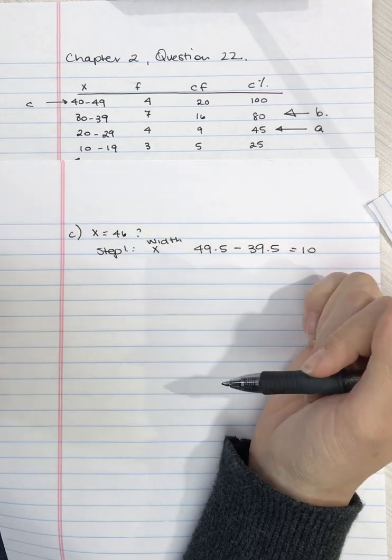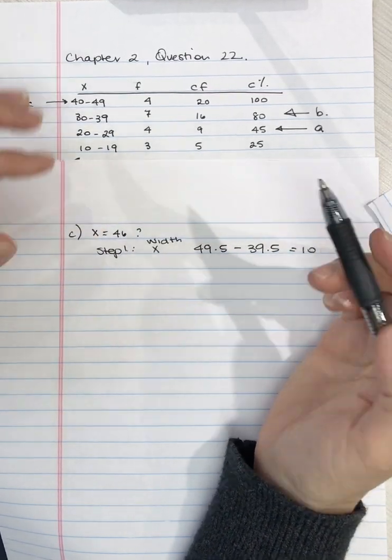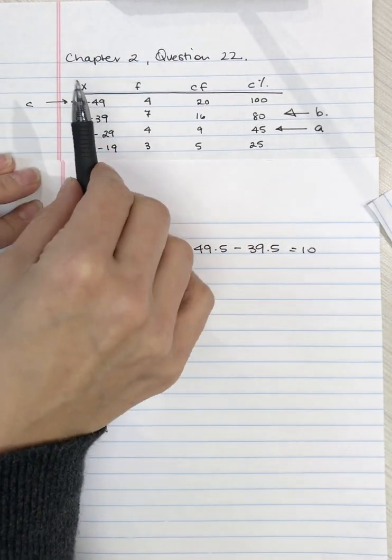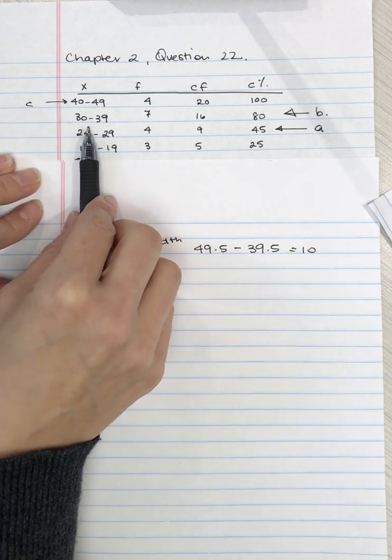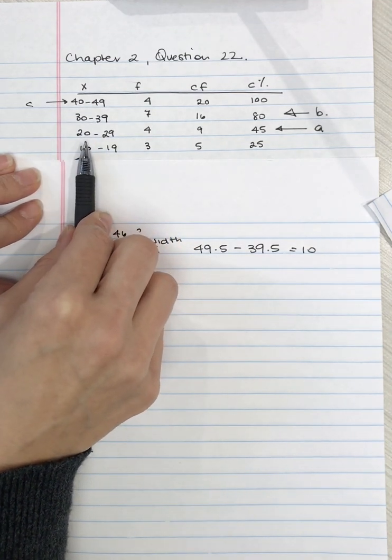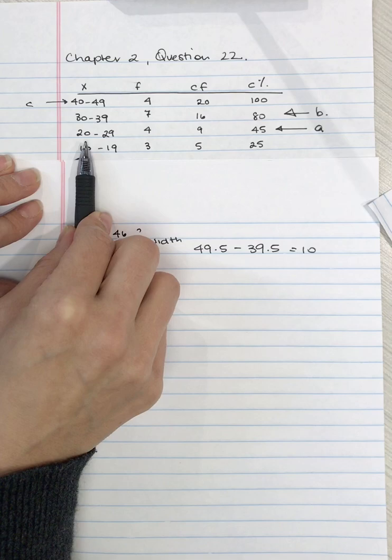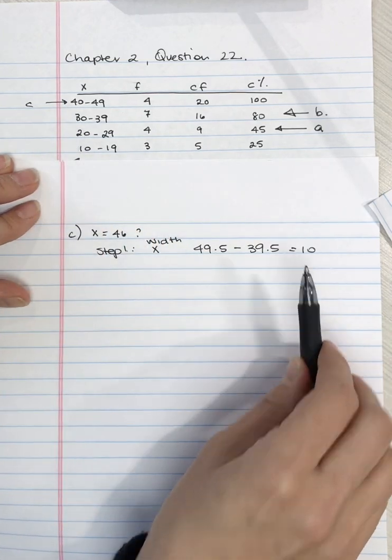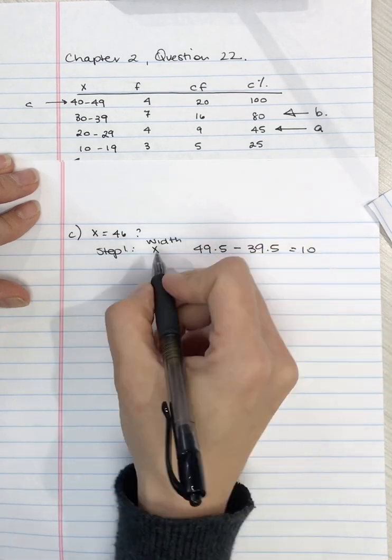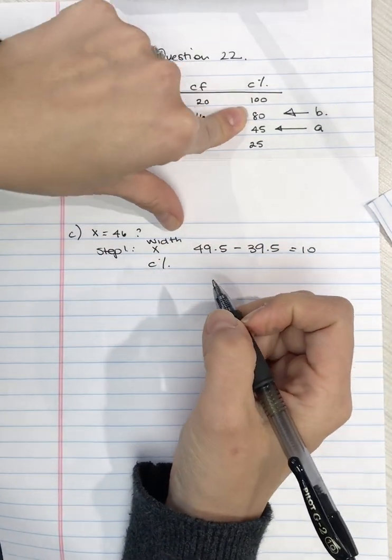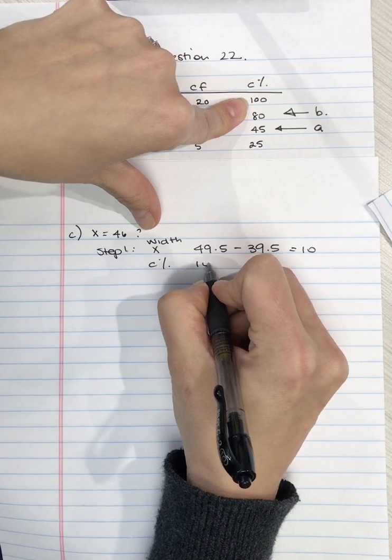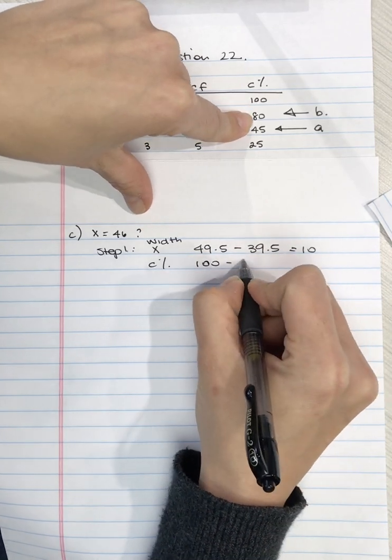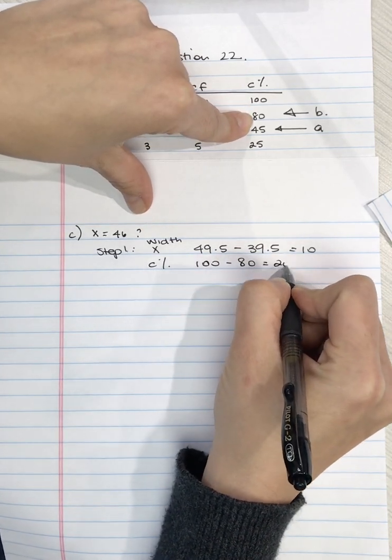I keep doing this just to also reinforce the width of the intervals on X because the frequency distribution was created properly the width is always the same. So we keep getting 10. The width on the cumulative percentage we take 100 minus 80 and we get 20.